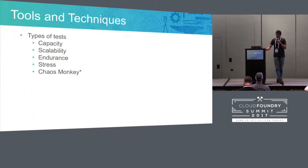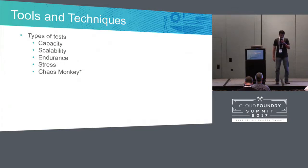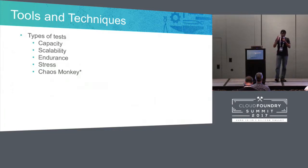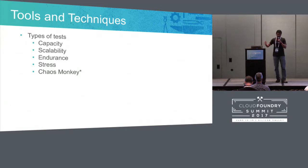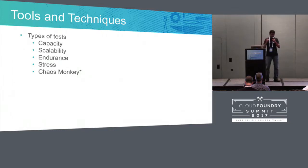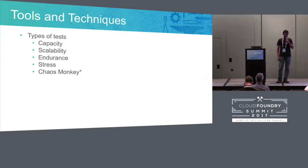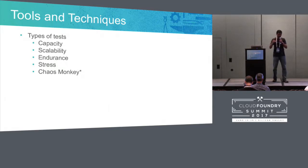We implement chaos monkey tests, which some of you might know started at Netflix with Amazon EC2 instances being brought down at random times in production. As part of capacity tests, we first make sure the service deployed to Cloud Foundry is well-tuned for the expected load on one instance. Then we do scalability tests by scaling out to 10, 50, or 100 instances. Endurance tests primarily detect resource leaks, failures, memory leaks, and CPU utilization going haywire. Stress tests find out how your application can recover itself after exhausting all resources.